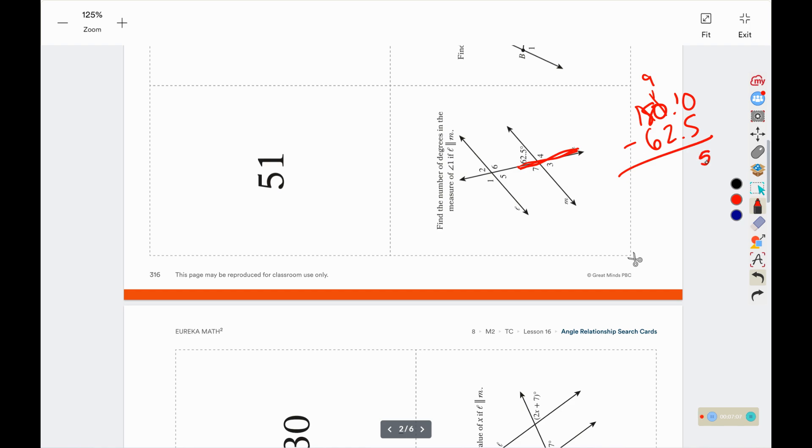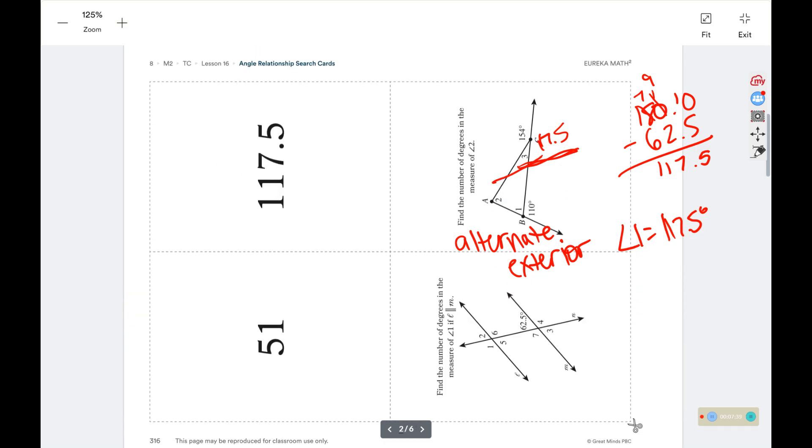10 minus 5 is 5. 9 minus 2 is 7. 7 minus 6 is 1. 1 minus nothing is 117. So angle 4 is 117, 117.5 degrees. Which, if we look, is the answer here. So then this would be our next question.